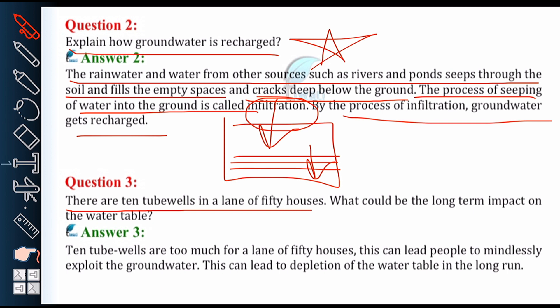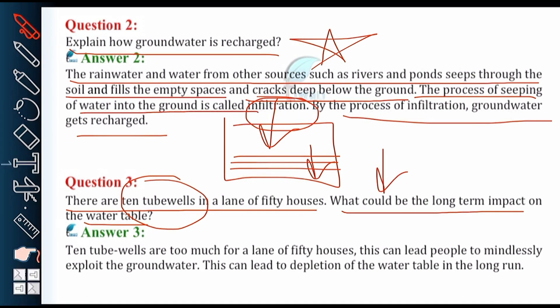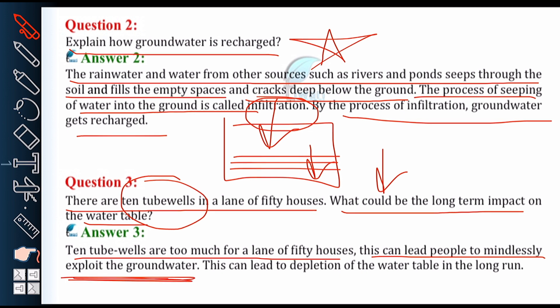Next is question number 3: there are 10 tubewells in a lane of 50 houses — what could be the long-term impact on the water table? 10 tubewells are too many for a lane of 50 houses. This can lead people to mindlessly exploit the ground water, and this can lead to depletion of the water table in the long run. So this is not good.